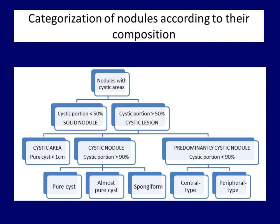Most guidelines do not mention a very important consideration: a purely cystic lesion less than one centimeter in maximal diameter is a normal finding in a healthy thyroid. These lesions correspond to dilated macrofollicles, and the term 'nodule' for such areas should be avoided — otherwise we create thyroid patients from almost every human being. Cystic nodules are divided according to the proportion of cystic content: if it exceeds 90%, most guidelines use the term 'cystic nodule', while if between 50–90%, the nodule is classified as predominantly cystic.